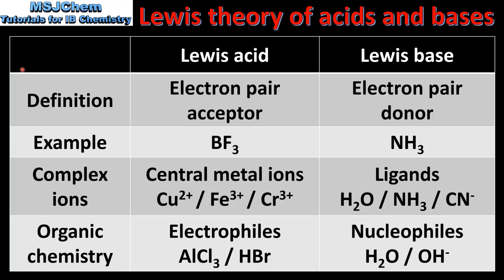We will end the video with a summary. A Lewis acid is an electron pair acceptor and a Lewis base is an electron pair donor. An example of a Lewis acid is boron trifluoride and ammonia NH3 is a Lewis base. In terms of complex ions, central metal ions act as Lewis acids and ligands act as Lewis bases. In organic chemistry, electrophiles act as Lewis acids and nucleophiles act as Lewis bases. In the next video we'll have a comparison of the Bronsted-Lowry theory and the Lewis theory.